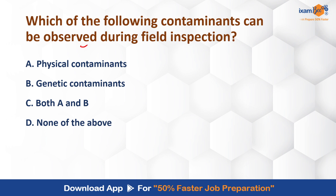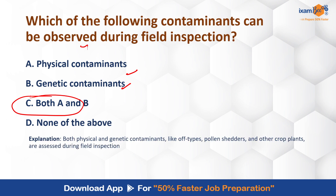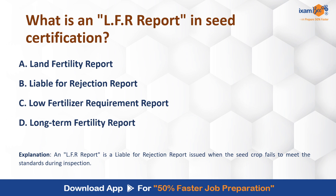Which contaminants can be observed during field inspection? Both physical impurities and genetic contaminants can be observed. The field inspection focuses on genetic contaminants. A Liable for Rejection Report (LFR) is issued when the seed lot meets the inspection criteria for rejection — meaning if a lot is not meeting standards, the inspector will issue this LFR report.